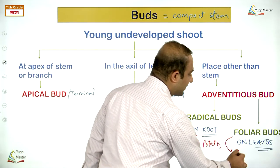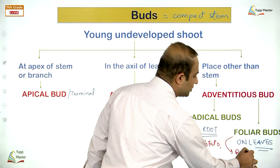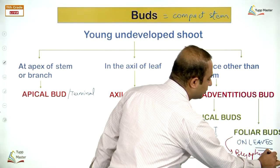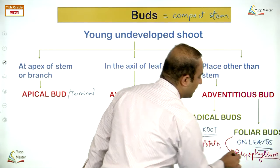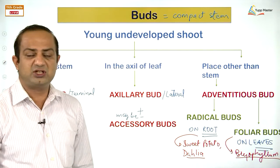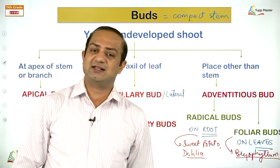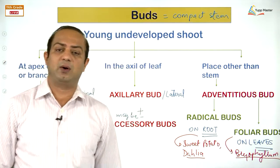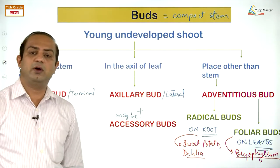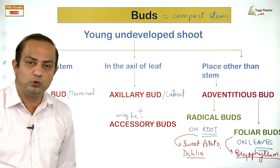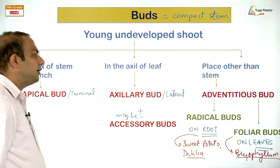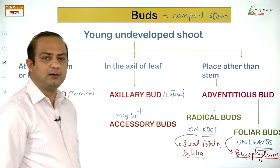Remember: thorns, prickles, and spines are different. What you see on roses are prickles. What you see on Acacia or Zizyphus are spines. What you see on orange, lemon, or bougainvillea are thorns. All three are pointed structures protecting the plant from predation, but they are different structures. A thorn is a modified stem; a spine is a modified leaf or leaf part; prickles are mere outgrowths of the surface.